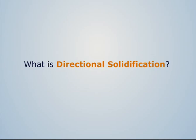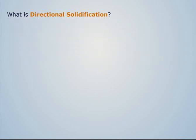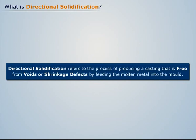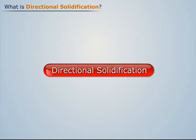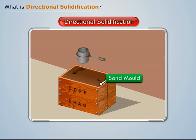Directional solidification refers to the process of producing a casting that is free from voids or shrinkage defects by feeding the molten metal into the mold. Let's now discuss how this solidification process takes place.